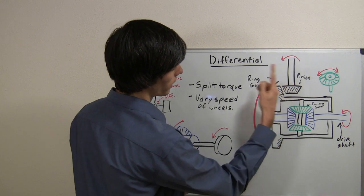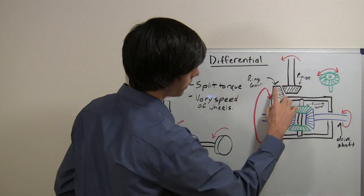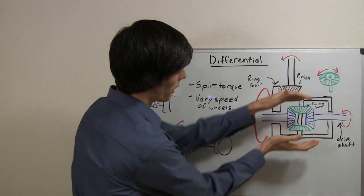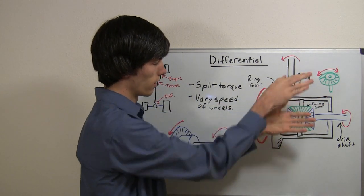So as this rotates this direction, everything that you see in black here, all of the black, is the housing for this differential. And it's going to rotate like so.